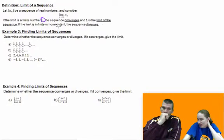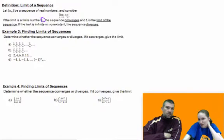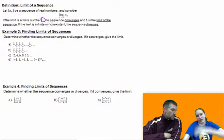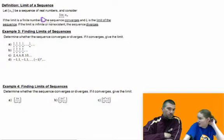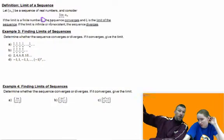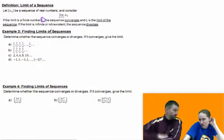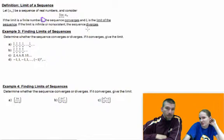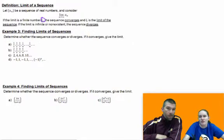But otherwise, like if we can't end up getting to some number because it either just keeps getting bigger, like bigger and bigger numbers or smaller and smaller numbers towards negative infinity, maybe it oscillates. Yeah, it goes back and forth, like 1, negative 1, 1, negative 1. So those are cases where the limit's not going to exist, and we call, or we say the sequence diverges.